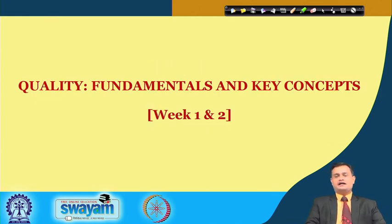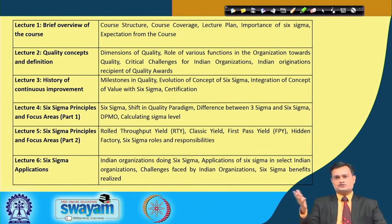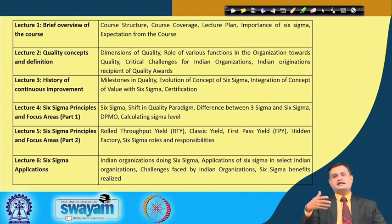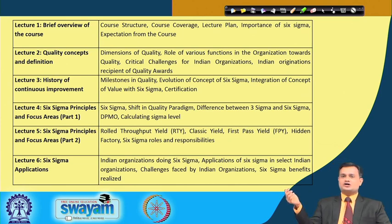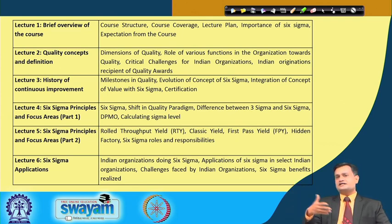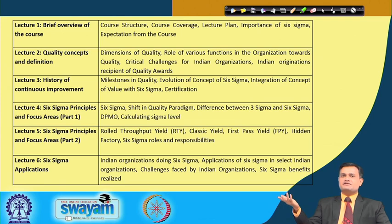We covered quality fundamentals and key concepts in weeks 1 and 2. Week 1 gave a brief overview of the course, detailed course structure, exam structure, expectations, prerequisites and suggested textbook references. Lecture 2 deliberated on quality concepts and definitions given by various quality gurus — Ishikawa, Crosby, Juran and many others. Lecture 3 covered the history of continuous improvement over the last 100 years. Lecture 4 addressed Six Sigma principles and focus areas: the difference between Three Sigma and Six Sigma, what DPMO is, and how to calculate Six Sigma level.